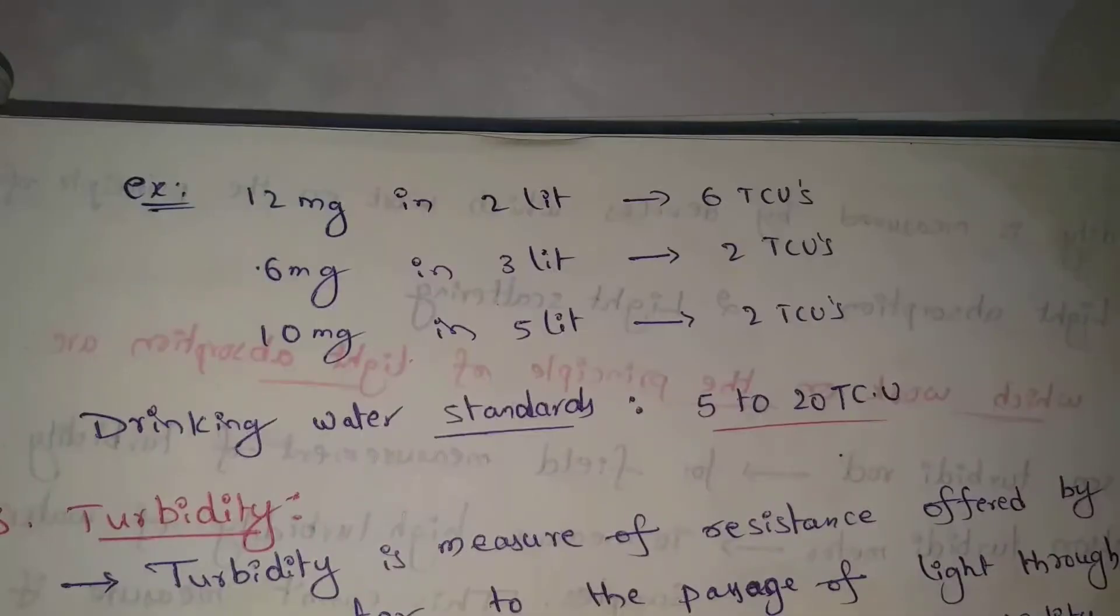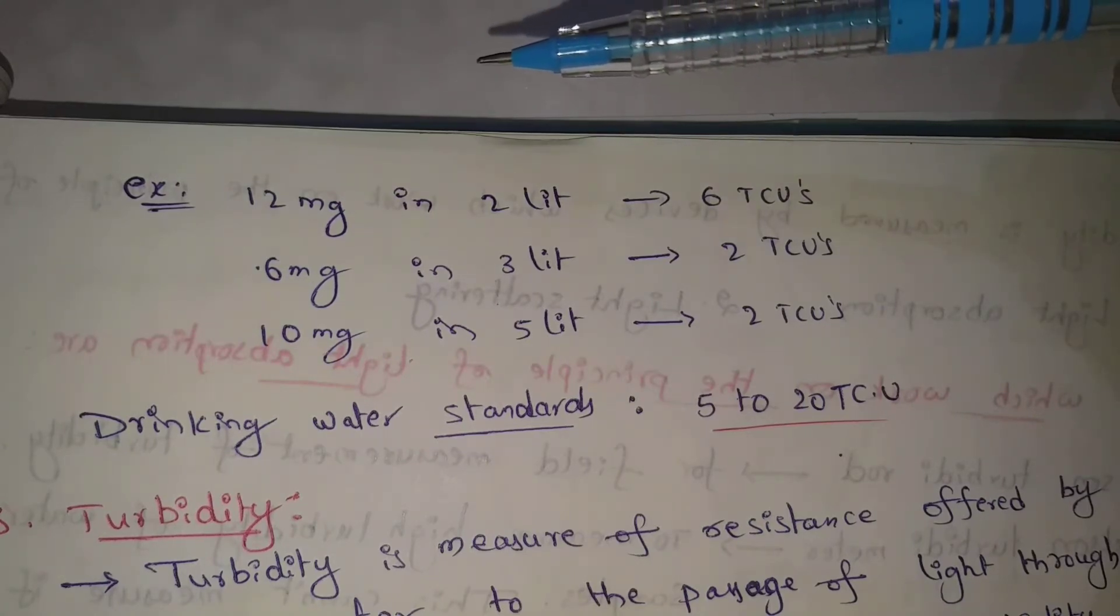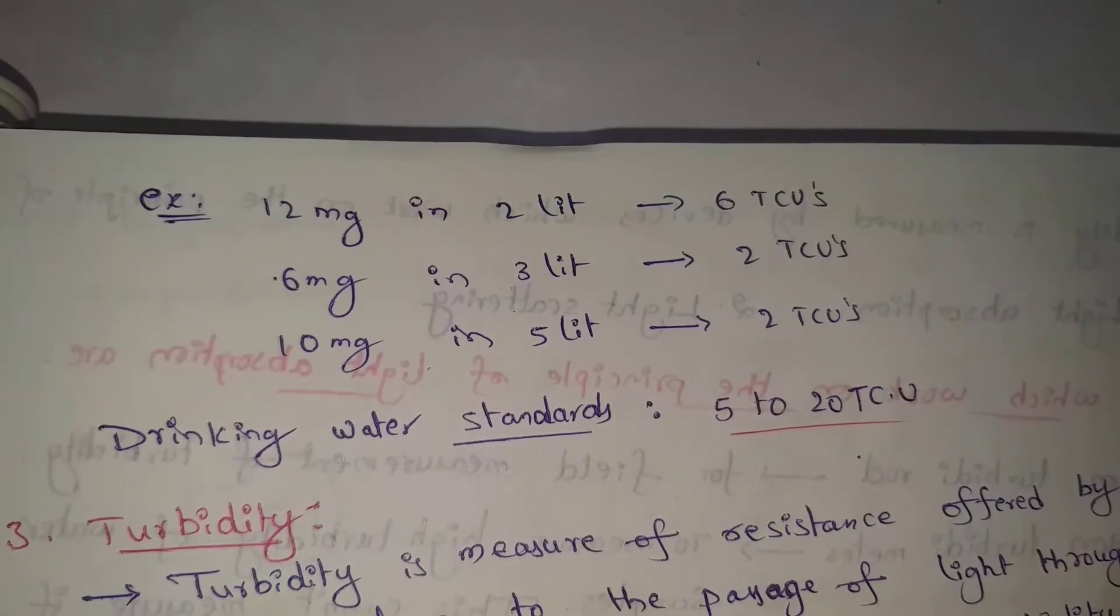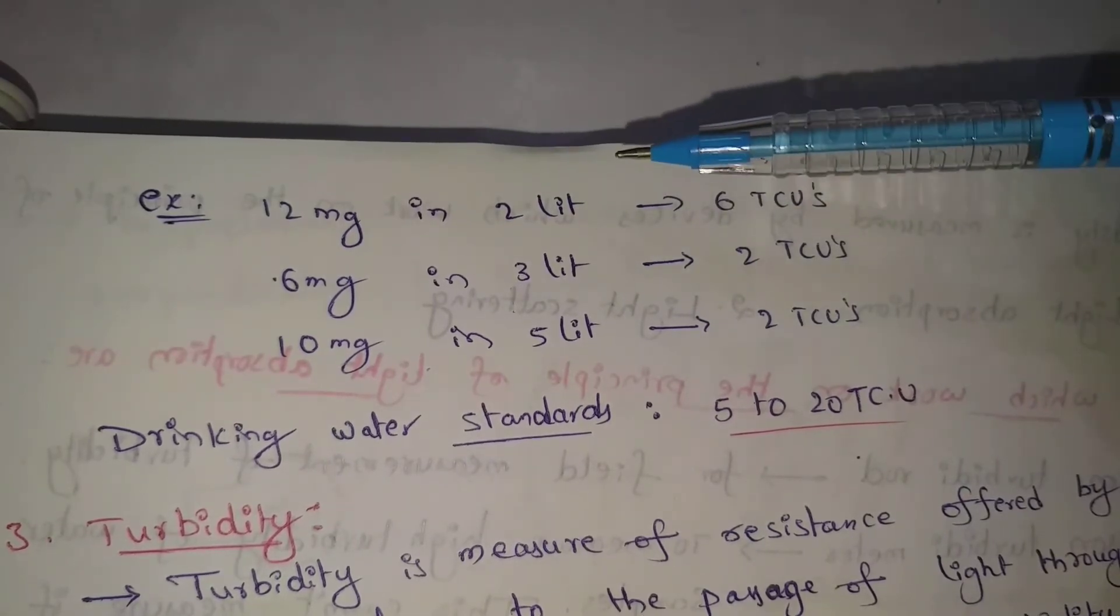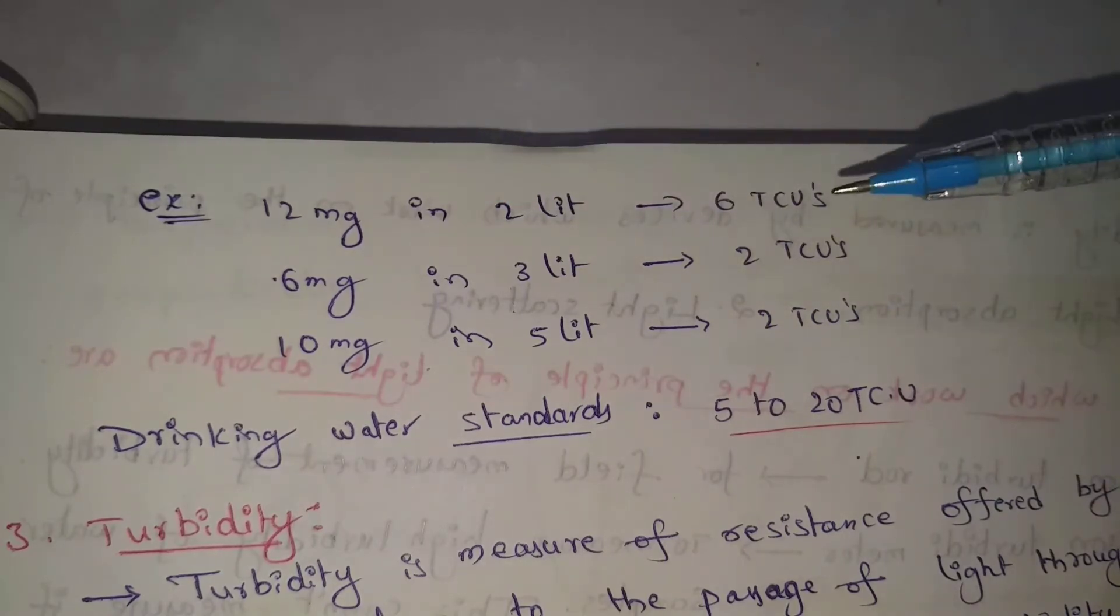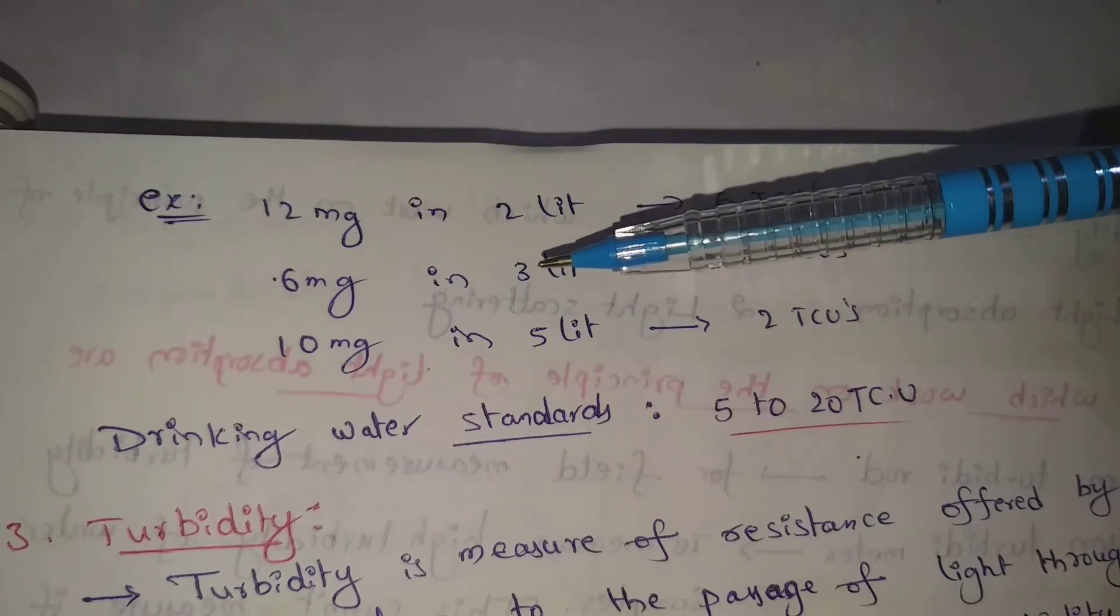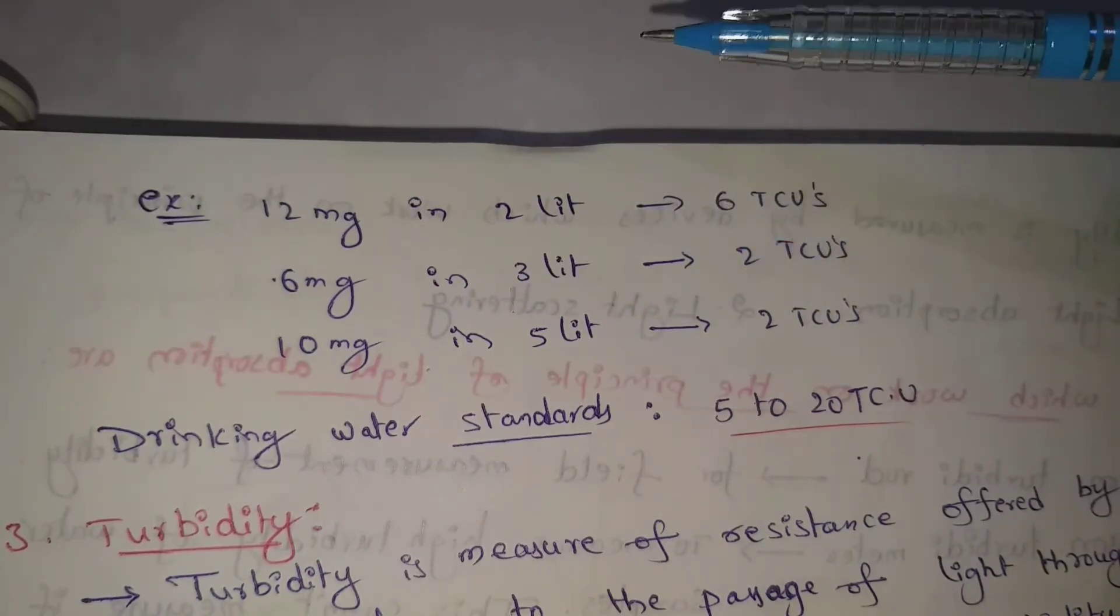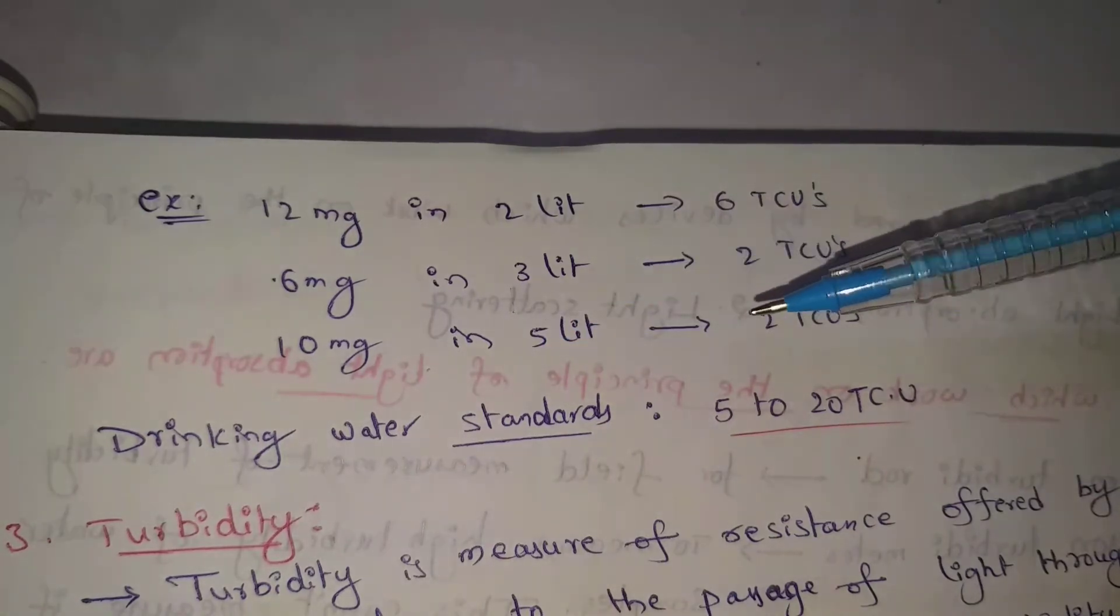Here are some examples. One liter of distilled water with one milligram of platinum chloroplatinate equals one TCU. For two liters, that's 2 TCU. For three liters with 6 milligrams, that's 2 TCU (6 divided by 3 equals 2 TCU).